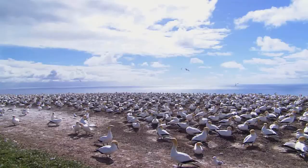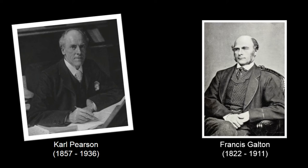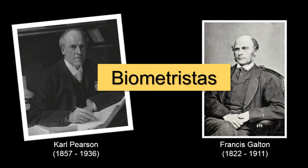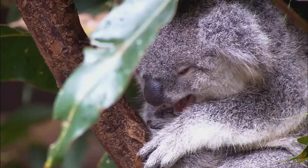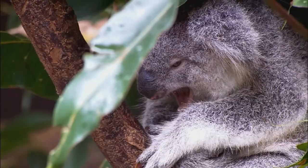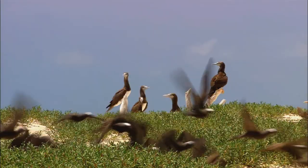No final do século XIX, é apresentada a ele a problemática de se medir os efeitos da seleção natural. Conhece Francis Galton, fundador da eugenia, com quem liderou um grupo de evolucionistas conhecidos como biometristas. O objetivo era encontrar regularidades estatísticas que pudessem descrever a passagem de variações contínuas de uma população parental para sua prole.